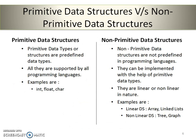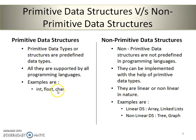The first type is primitive data structures. The name itself suggests that primitive data structures are predefined data types or structures, and they are supported by all programming languages. The examples are integer, float, character, boolean, and so on.